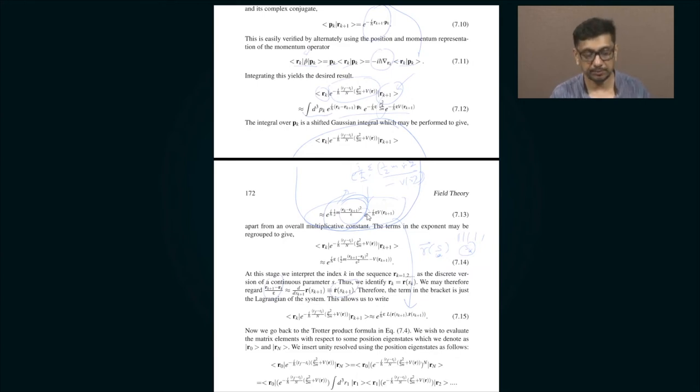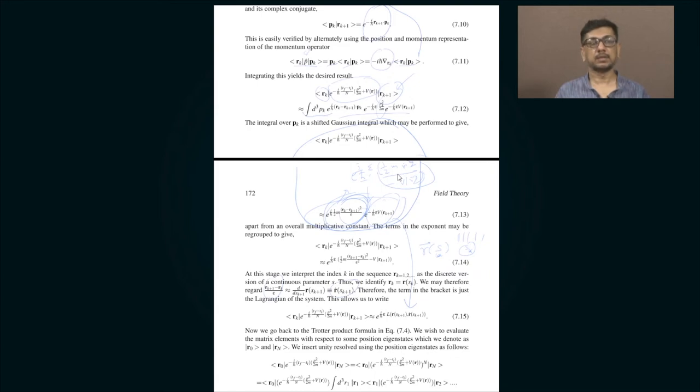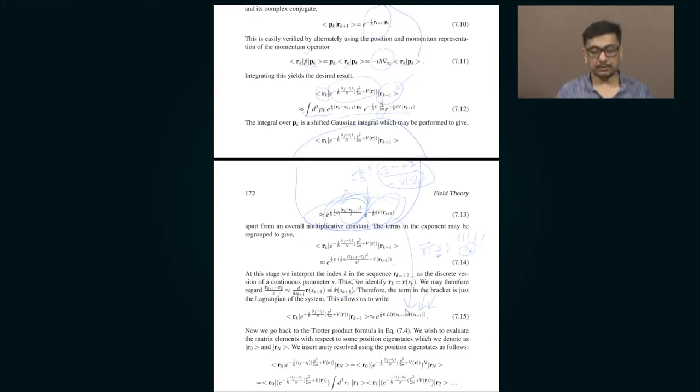Since these are all numbers now, there is no issue with e^(A+B) ≠ e^A · e^B — that problem only arises for non-commuting operators, not numbers. Combining the kinetic and potential terms gives ½mṙ² − V(r), which is exactly the Lagrangian. So the matrix element becomes e^(i/ℏ · ε · L), where L is the Lagrangian.